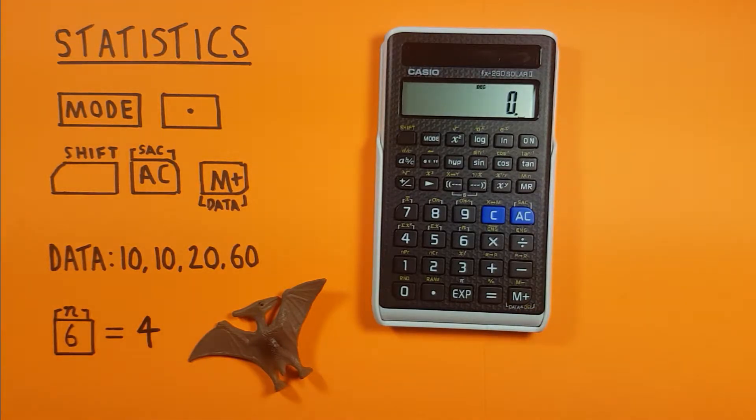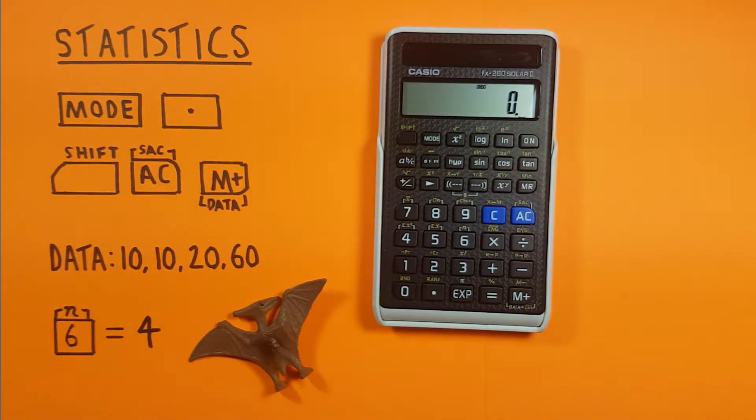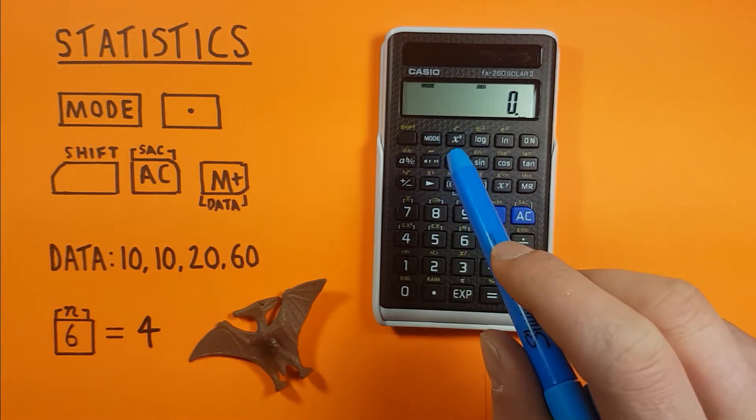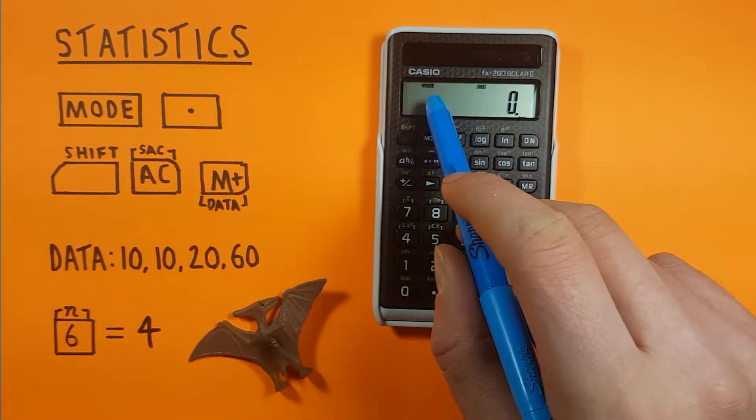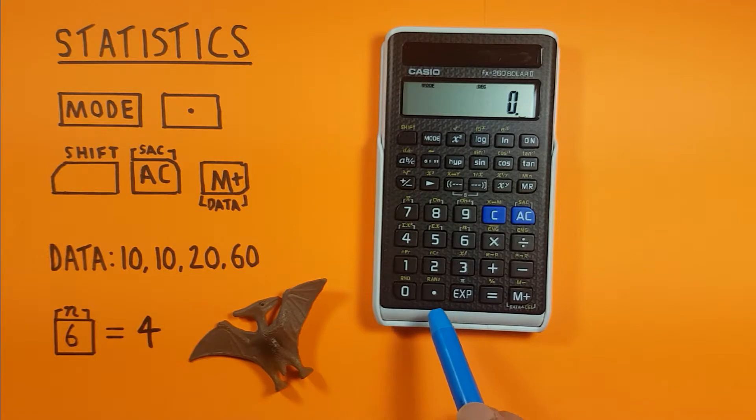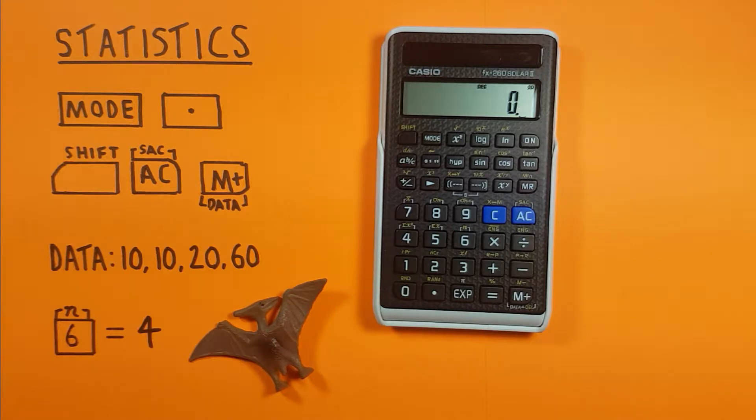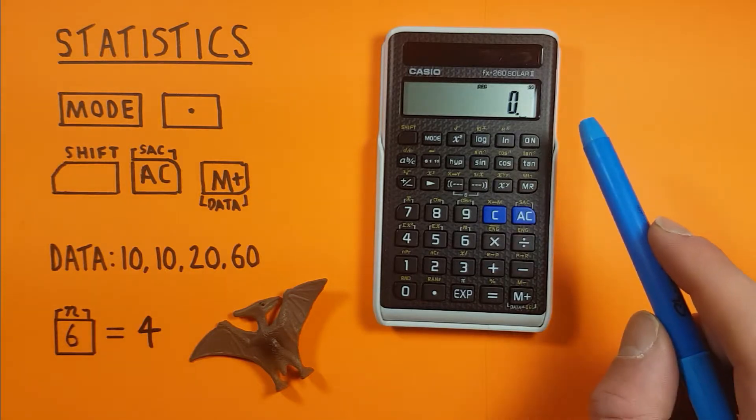Now the first thing to do is change our calculator mode from its normal mode to SD or statistics mode. To do this, press the mode key and then the decimal button, and now you'll see SD in the top right hand corner. This tells us our calculator is in statistics mode and it won't work without this, so make sure you got SD in the top right hand corner.